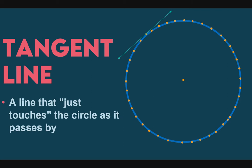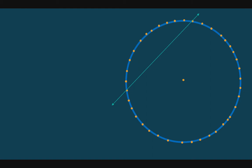Next, tangent line. A line that just touches the circle as it passes by. In short, this line just makes contact and immediately leaves. As we can see here, it only passes through the circle at one point. And that point is called the point of tangency.